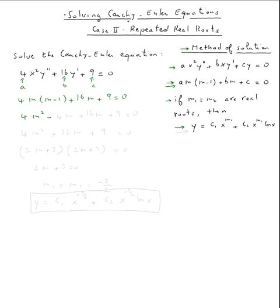So solving this is pretty easy to distribute. So four m squared minus four m times one is four m plus sixteen m is plus twelve m plus nine is equal zero. If you factor this one,